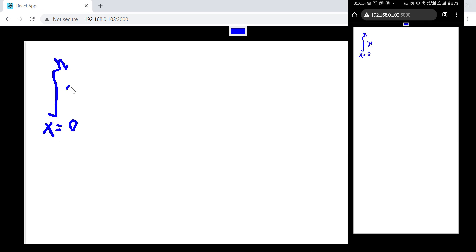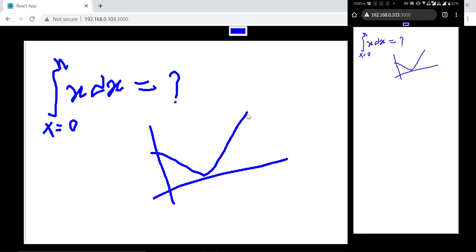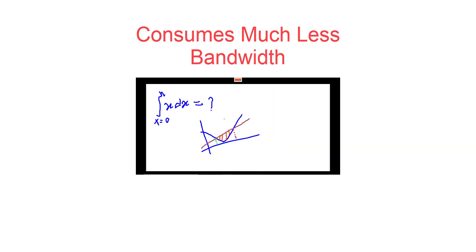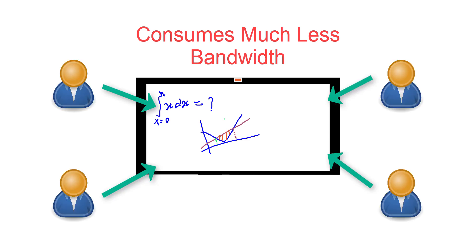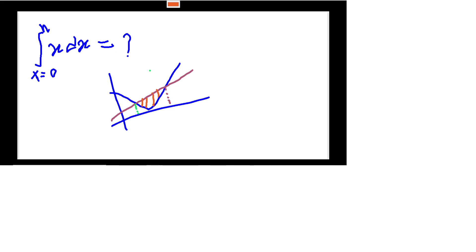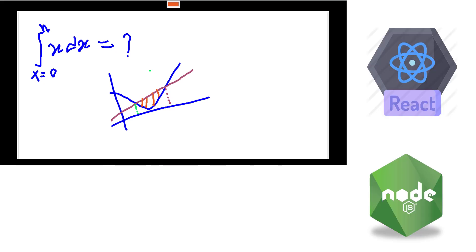When you want to describe something to your colleague, or trying to make your student understand something using a diagram, a Collaborative Whiteboard is the best way to do so. It works with much less bandwidth than a screen-sharing software and allows multiple users to interact at a time. We are going to develop a Collaborative Whiteboard today using React and Node.js.